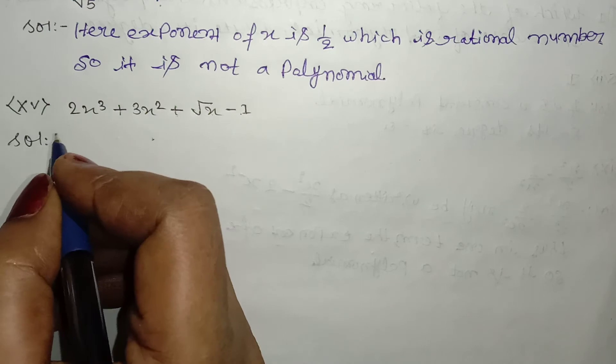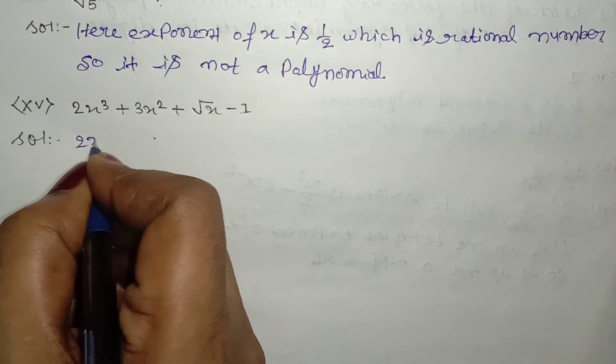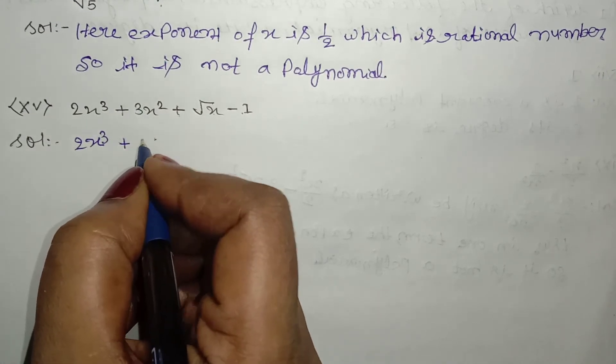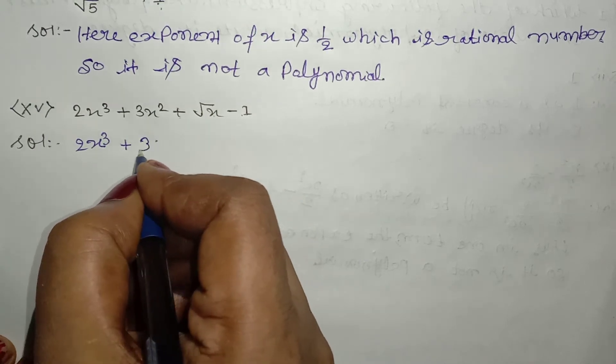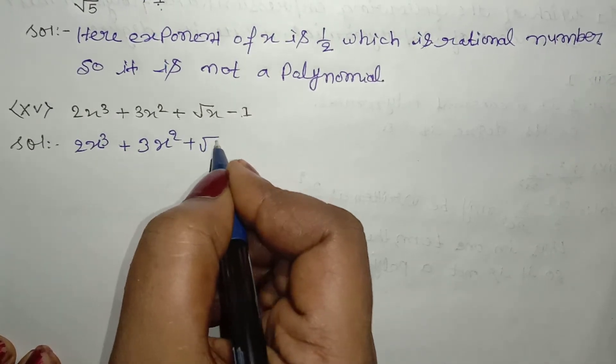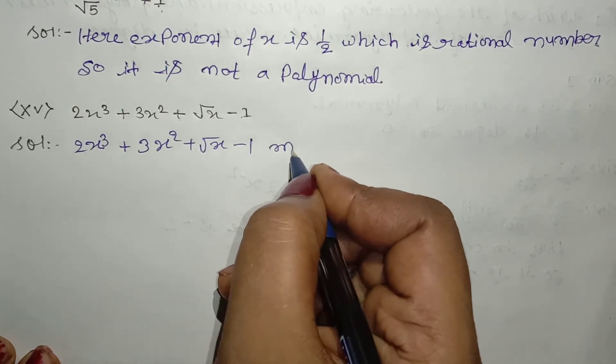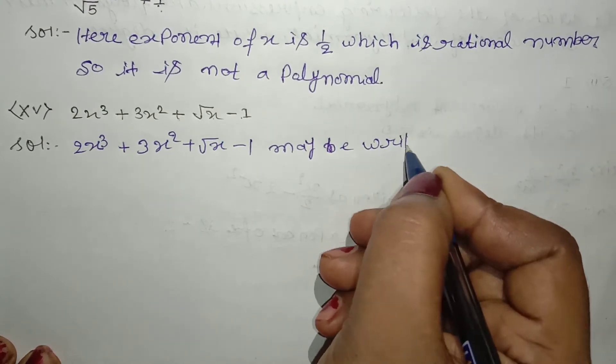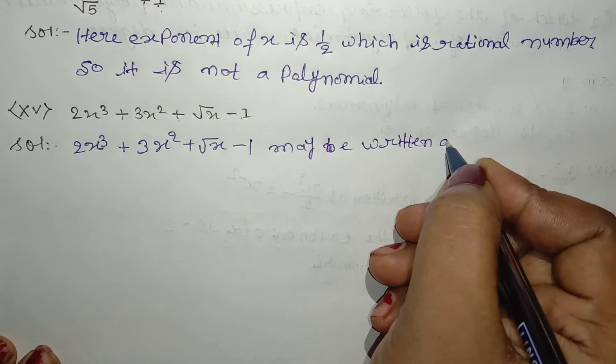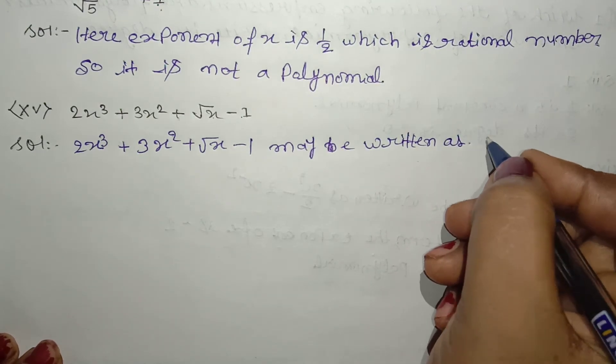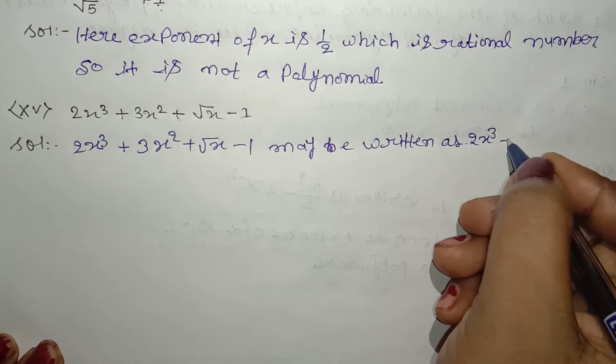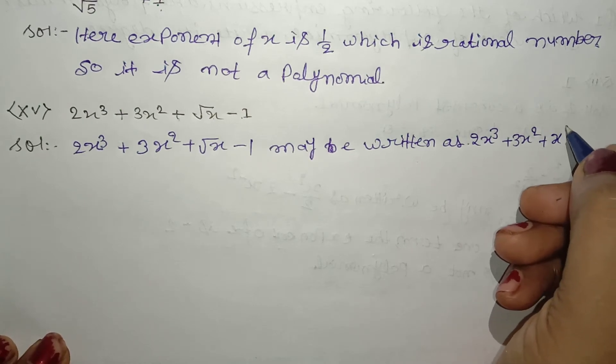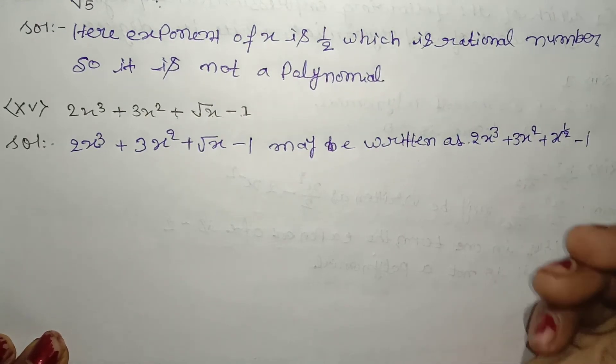This may be written as 2x³ + 3x² + x to the power 1 by 2 minus 1.